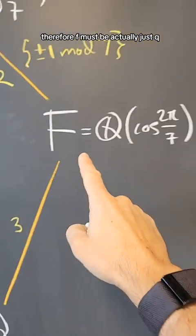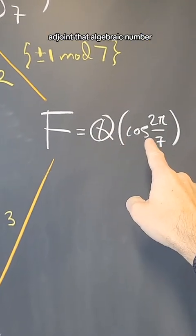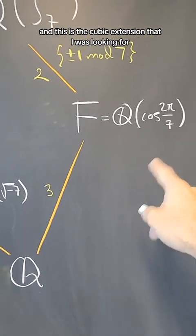Therefore, f must be actually just Q adjoined that algebraic number. And this is the cubic extension that I was looking for.